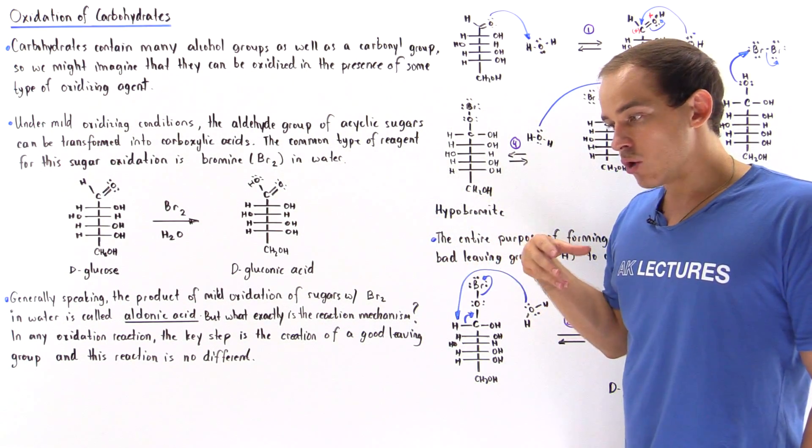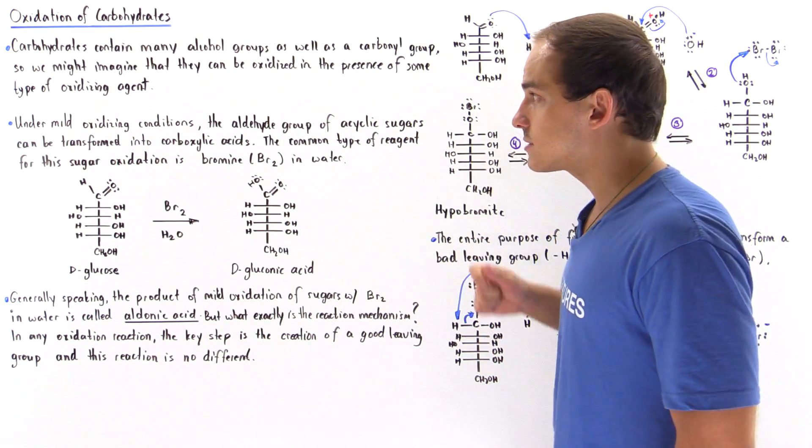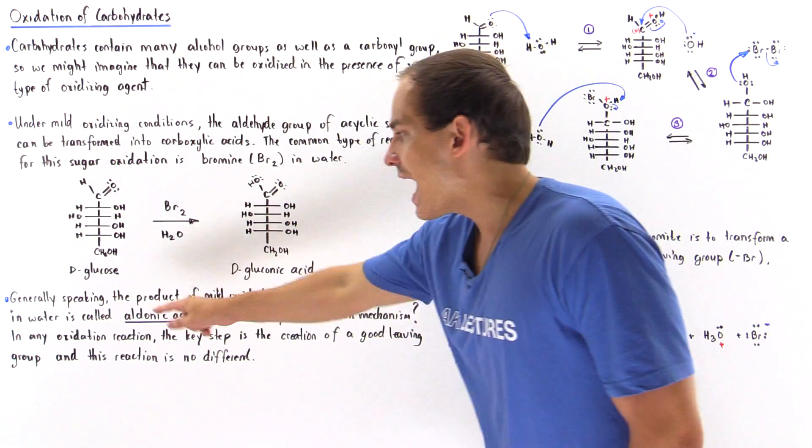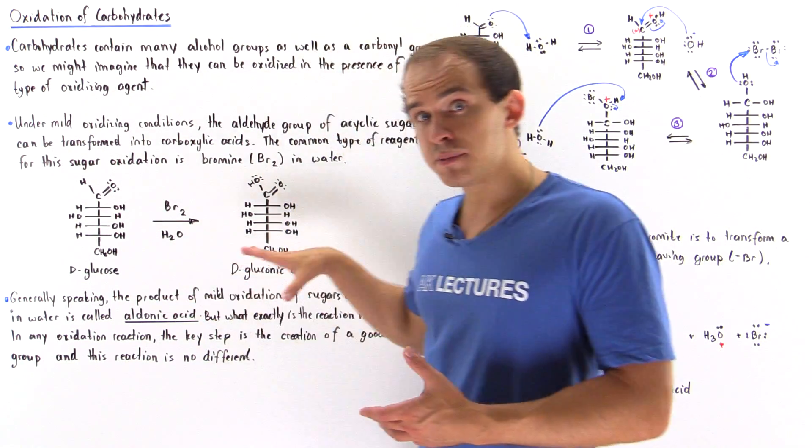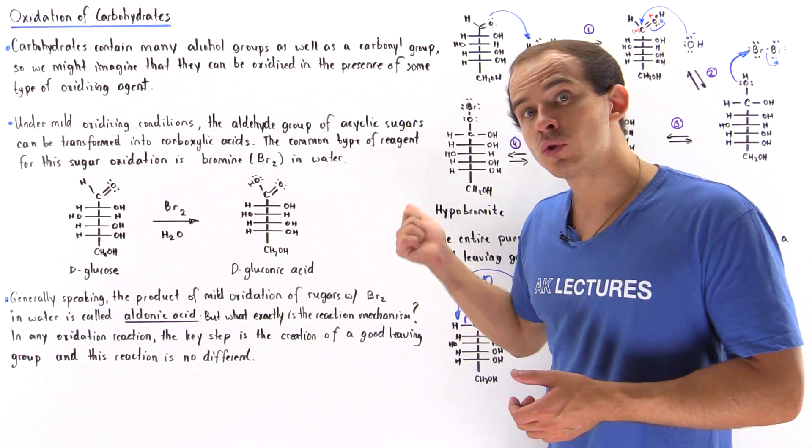The general word that describes the product that is produced under mild oxidizing conditions is aldonic acid. But in this specific case, if we use D-glucose, it's called D-gluconic acid.